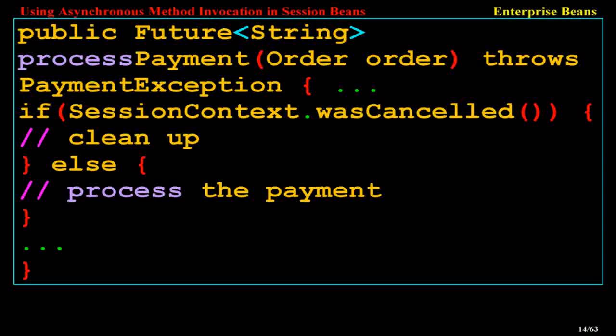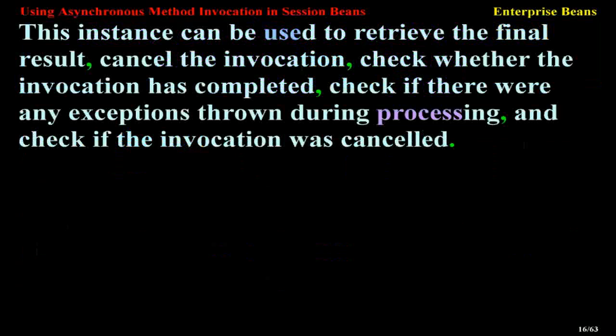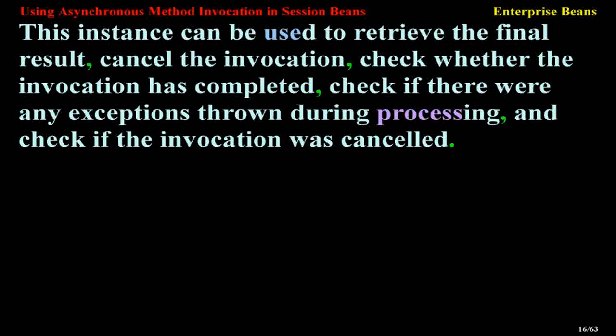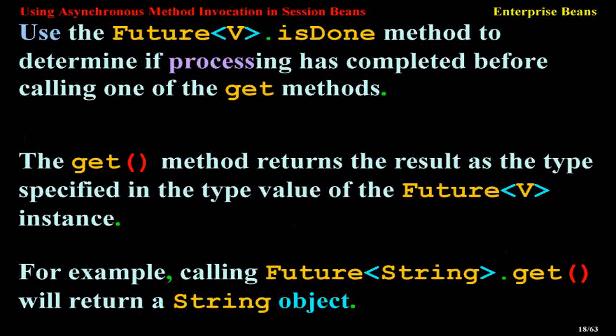Calling asynchronous methods from Enterprise Bean clients: Session Bean clients call asynchronous methods just like non-asynchronous business methods. If the asynchronous method returns a result, the client receives a Future<V> instance as soon as the method is invoked. This instance can be used to retrieve the final result, cancel the invocation, check whether the invocation has completed, check if there were any exceptions thrown during processing, and check if the invocation was cancelled. To retrieve the final result, the client may use one of the Future<V> get methods. Use the Future<V> isDone() method to determine if processing has completed before calling get().